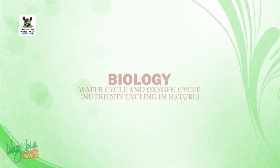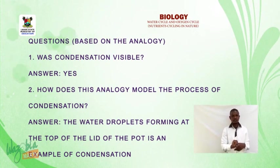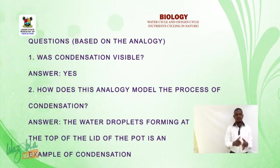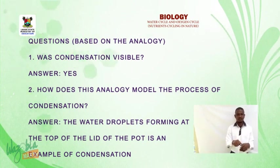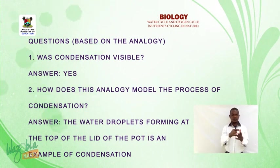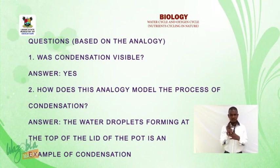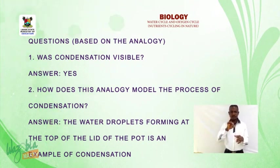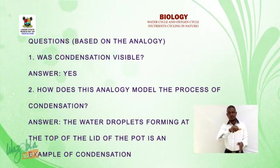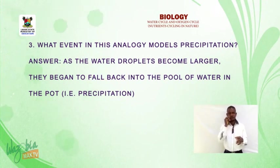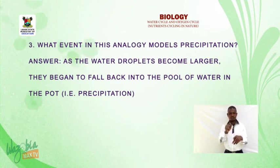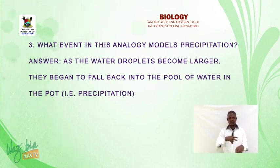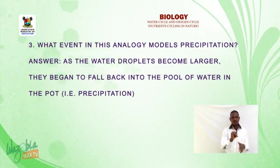Welcome back. Questions based on the analogy: One, was condensation visible in that analogy? Answer: Yes. Two, how does this analogy model the process of condensation? Answer: the water droplets forming at the top of the lid of the pot is an example of condensation. What event in this analogy models precipitation? Answer: as the water droplets become larger, they begin to fall back into the pool of water in the pot — that is precipitation.